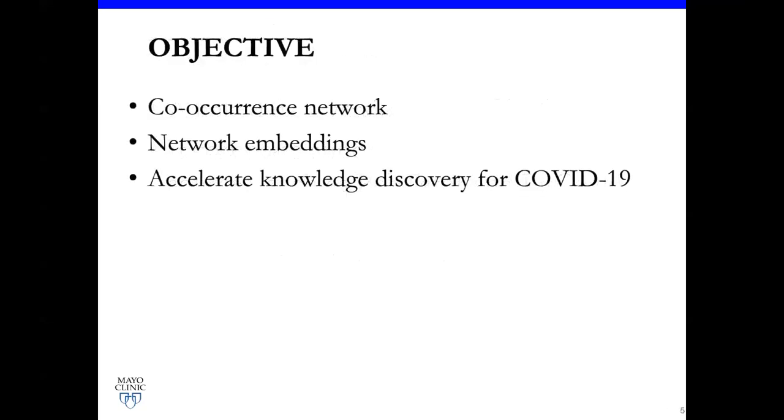Driven by those very good data sources, in this study, our objective is to first derive a co-occurrence network based on the COVID-19 on FHIR dataset. After we generate the network, we build the network embedding in order to accelerate knowledge discovery for COVID-19.